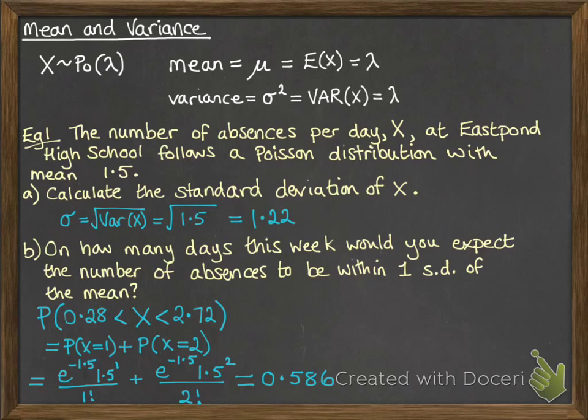Now we're looking for how many days this week we could expect that to happen. So we will do that times by 5 days of the week, and we get 2.93 days where we expect the absences to lie within one standard deviation of the mean.